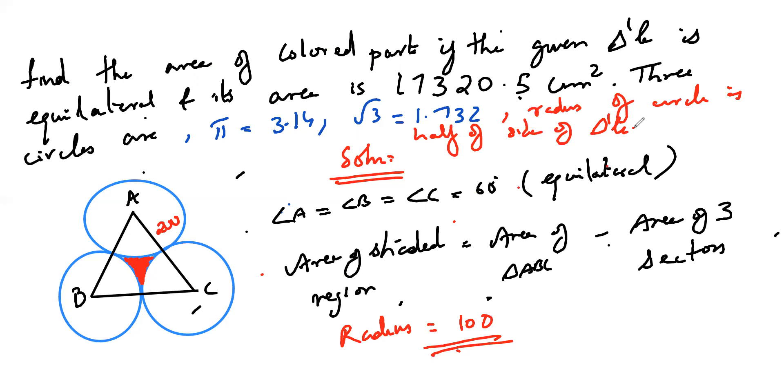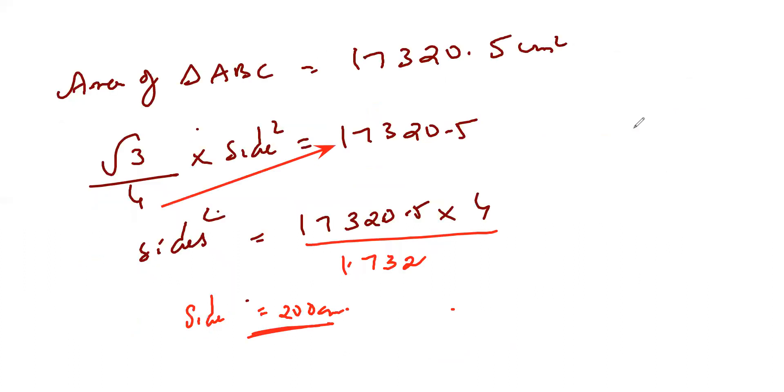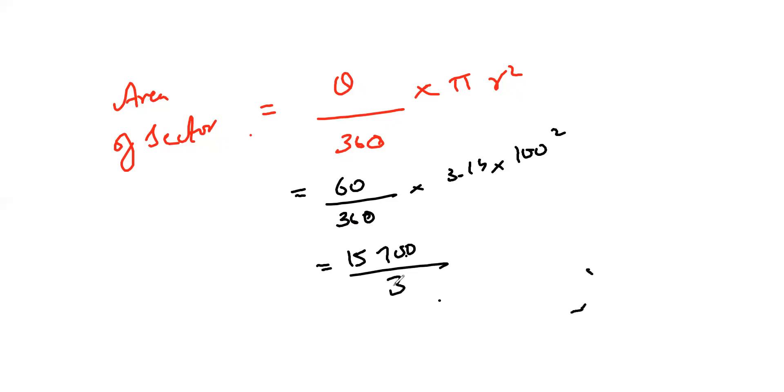So if I get radius of 100, then I can put what? Area of a sector formula. Theta by 360 into pi r squared. And pi I should take it as 3.14 in this question. Theta is 60, 60 by 360 into 3.14 into 100 square. So I will get around 15700 by 3 centimeters square in this.